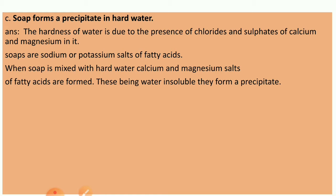C: Soap forms a precipitate in hard water. Answer: The hardness of water is due to the presence of chlorides and sulfides of calcium and magnesium in it. Soaps are sodium or potassium salts of fatty acids. When soap is mixed with hard water, calcium and magnesium salts of fatty acids are formed. These being water insoluble, they form a precipitate.